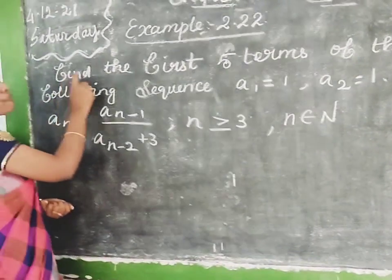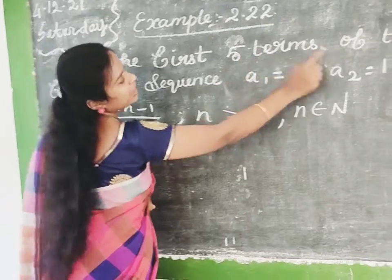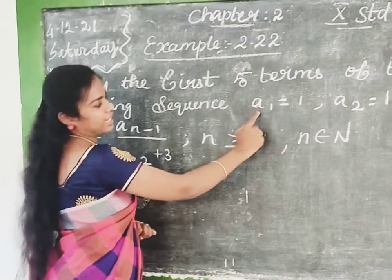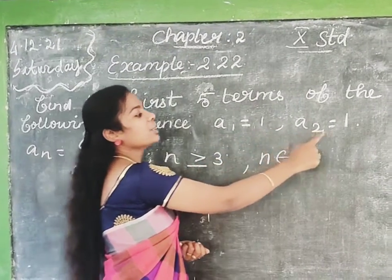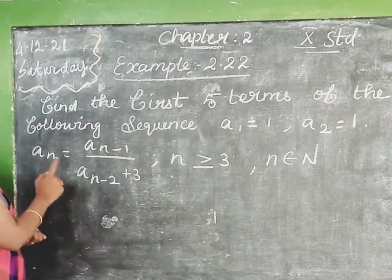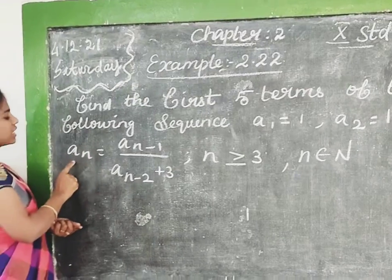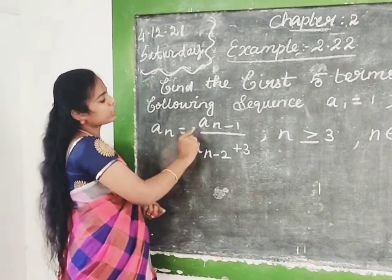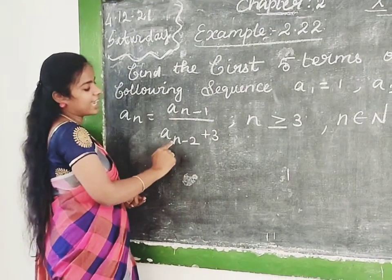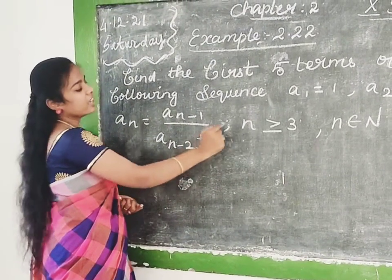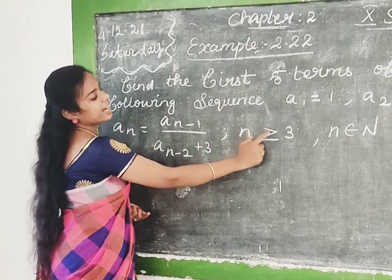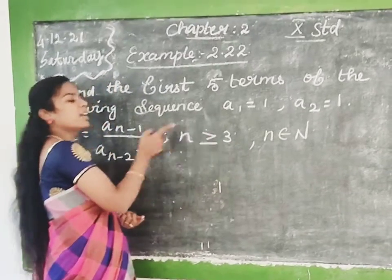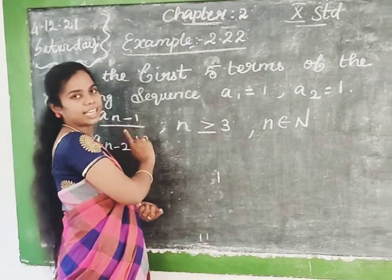Find the first five terms of the following sequence. The numbers are given: A1 value equal to 1, A2 equal to 1. Then we calculate using the common general equation: An equals A(n-1) divided by A(n-2), plus 3, for n greater than or equal to 3. We calculate the 3rd, 4th, and 5th terms.